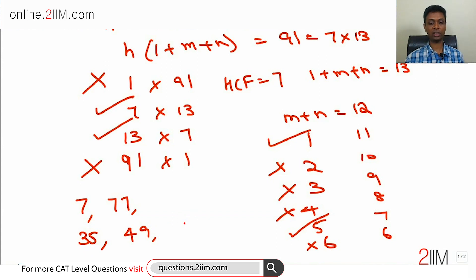So with HCF equal to 7, there are two possibilities: 7 comma 77, 35 comma 49.